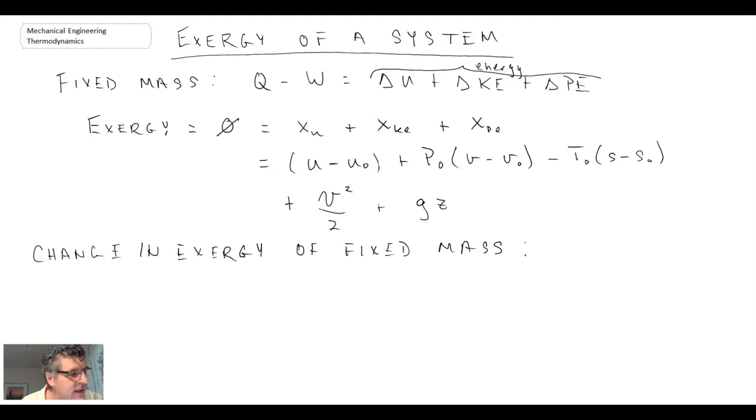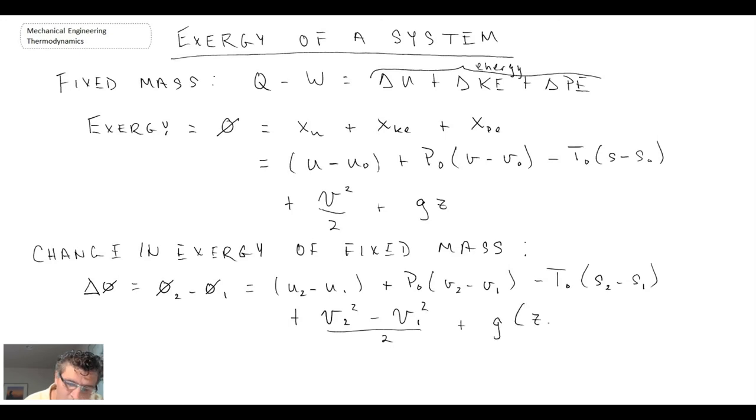And if we're looking at change in exergy of fixed mass, we will have delta phi. That would be phi 2 minus phi 1, and then we'll just evaluate the change of the exergy phi term that we have. So that's what we end up with for the change in exergy of fixed mass.